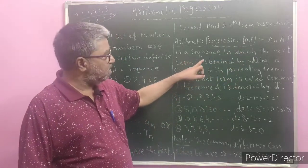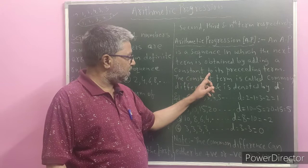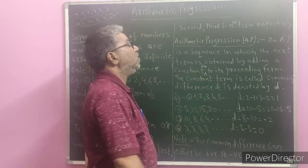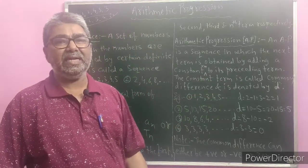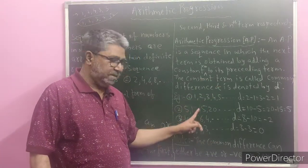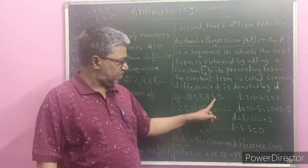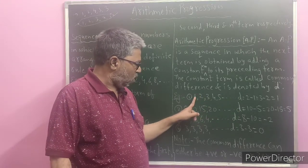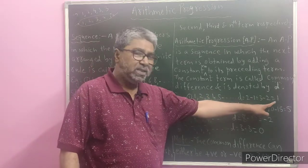In other words, an arithmetic progression is a sequence in which the next term can be obtained by adding a certain constant number to its preceding term. The constant number we are adding is called common difference and it is denoted by small d. So the standard form: an arithmetic progression is a sequence in which the next term is obtained by adding a constant number to its preceding term. Example 1: 1, 2, 3, 4, 5, and so on is an arithmetic progression because d equals 2 minus 1, or 3 minus 2, or 4 minus 3, or 5 minus 4, which is always 1 — it is constant.